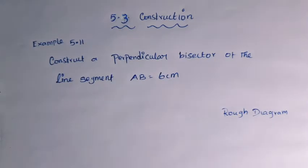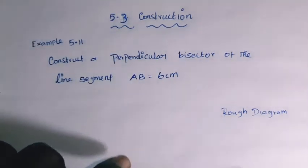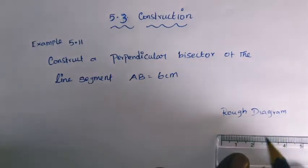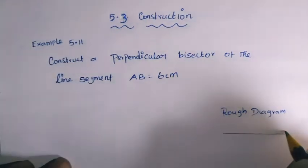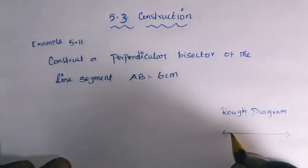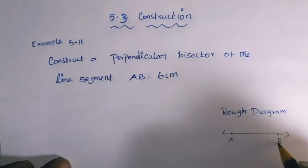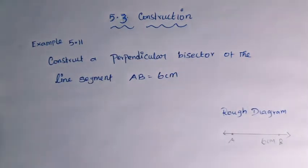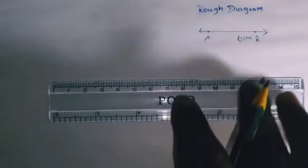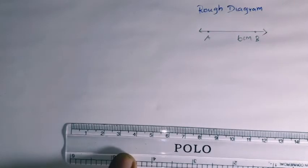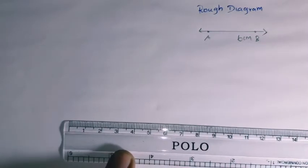First, we draw a rough diagram. The rough diagram shows a 6 centimeter line. Draw an arrow mark - one point is called A and another point is called B. The length is equal to 6 centimeters. This is just a rough diagram, not exact measurements. Next, we'll do the fair diagram with precise measurements.